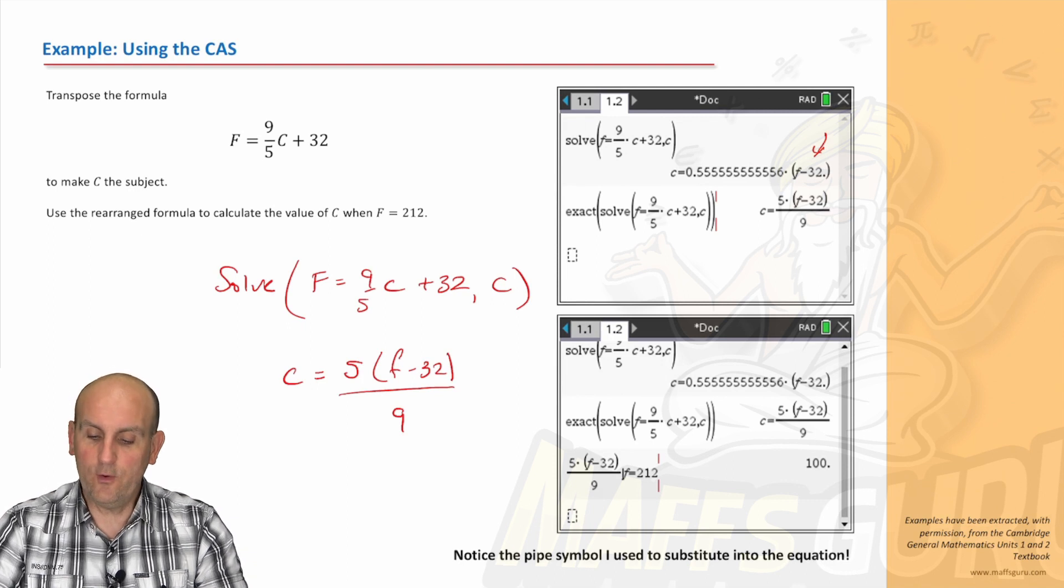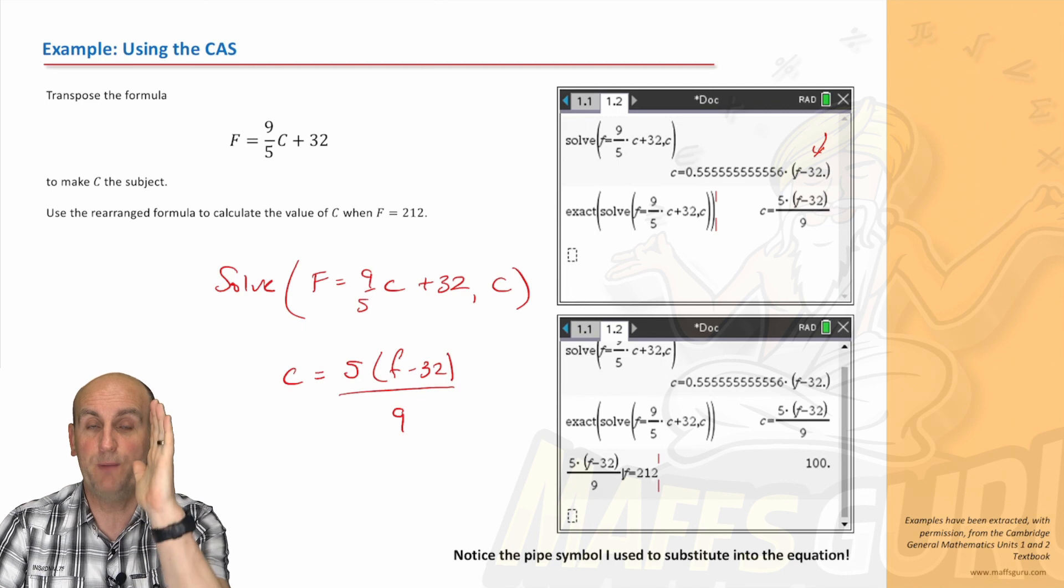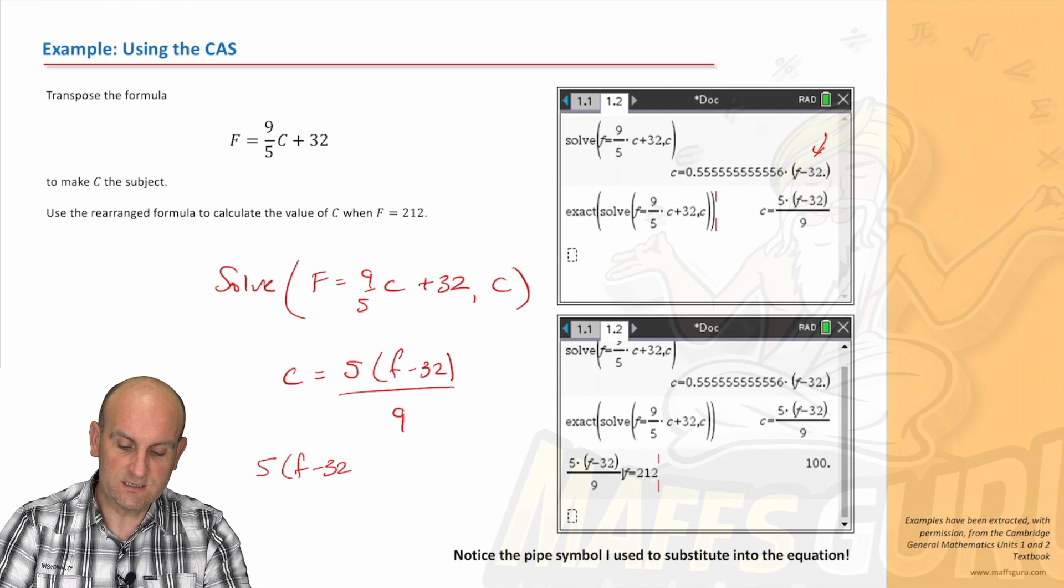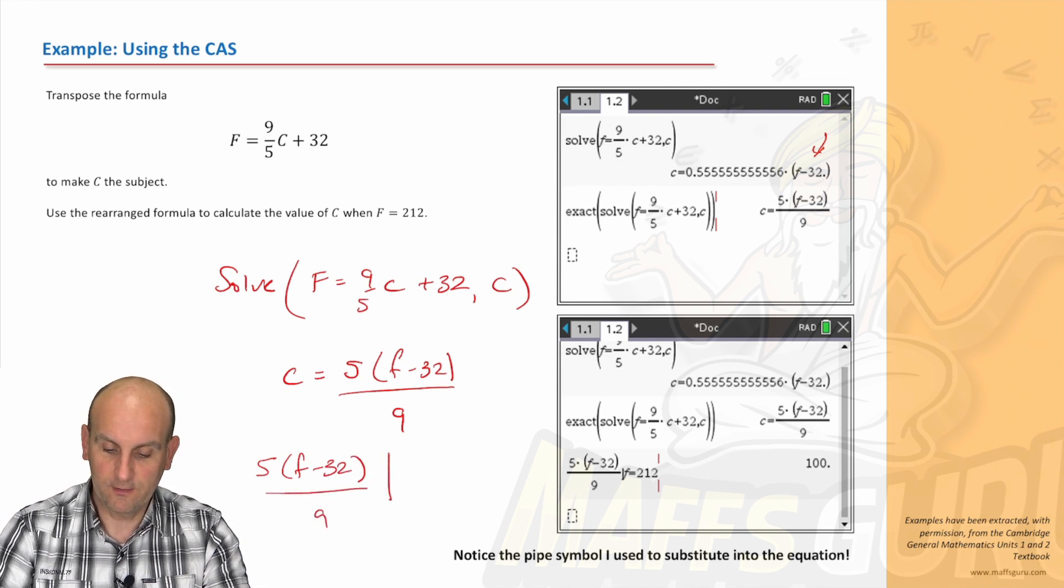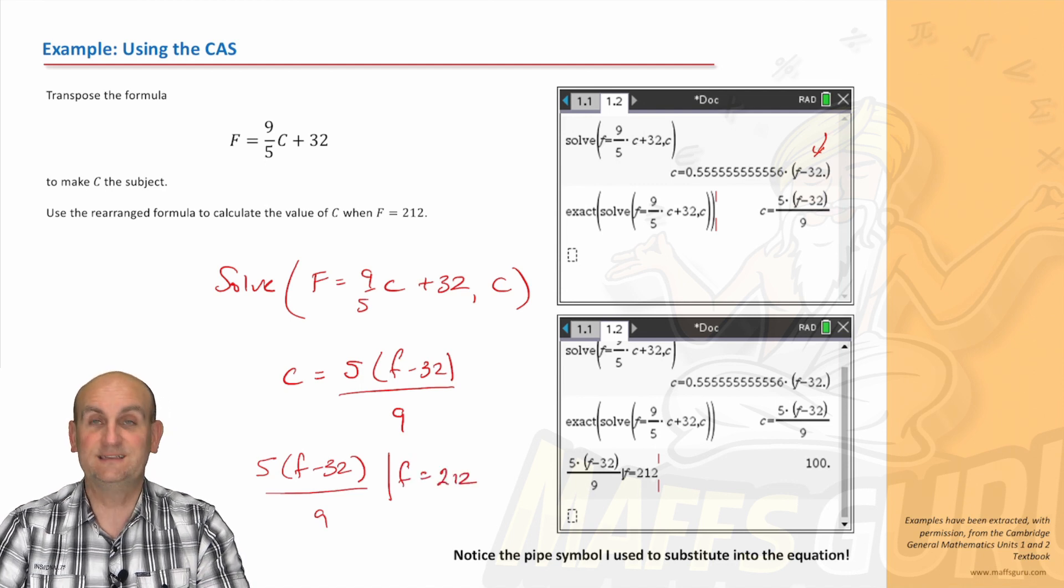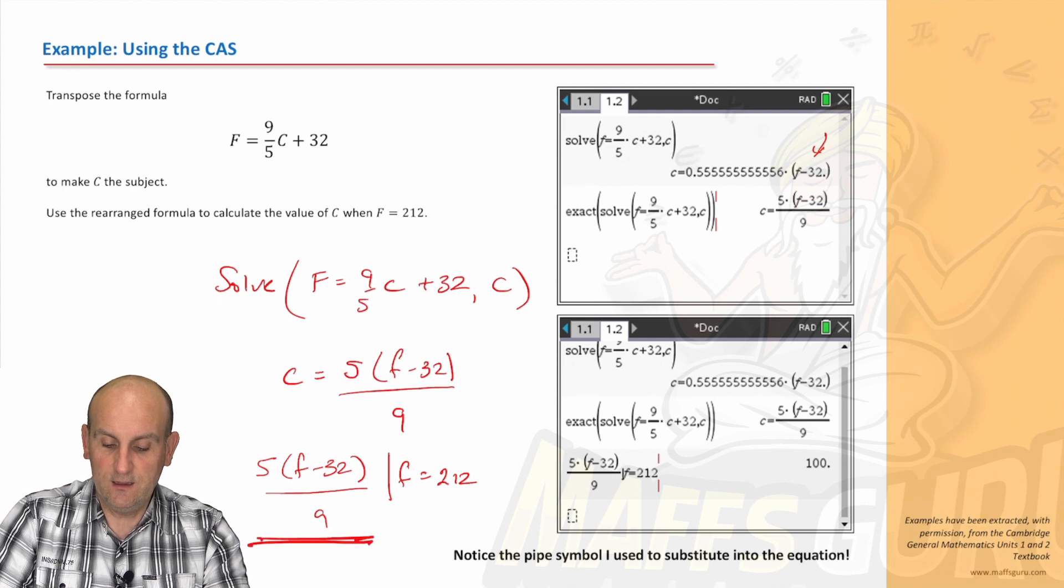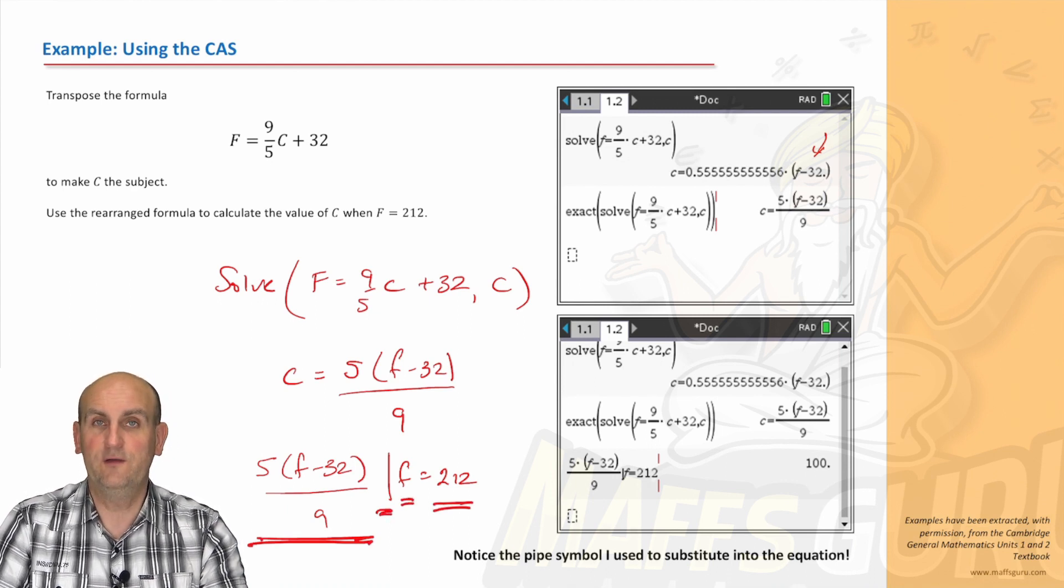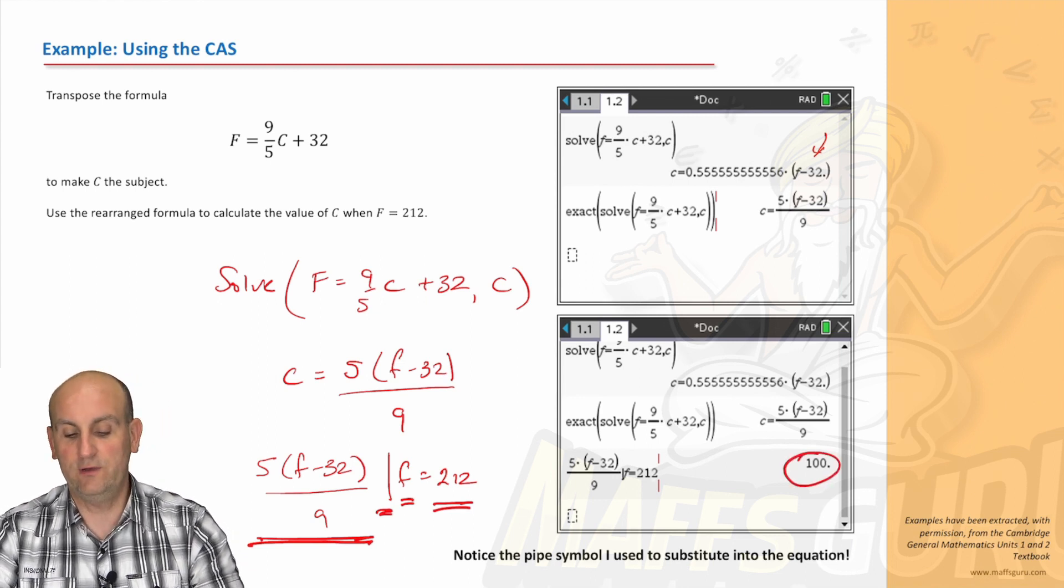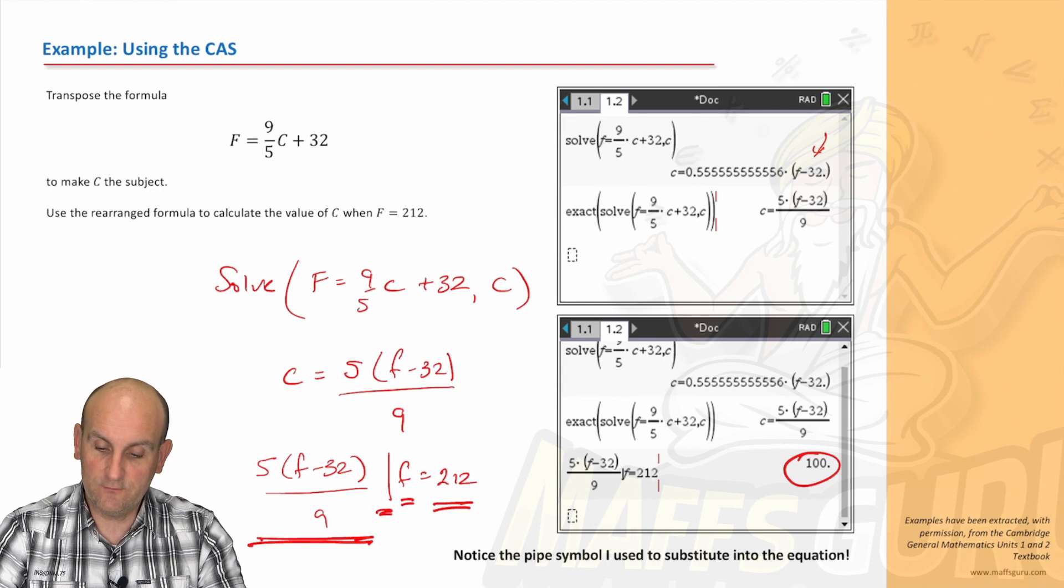Now what did I do then? I then wanted to go on and solve this. How? Well, you may notice there's another little interesting function on your calculator, which is the pipe symbol—it's the vertical line. And when I did 5F minus 32 on 9 and I did pipe and I said F equals 212 typed in exactly like that, what that says is: with this equation here, please substitute the value of F as 212 and return the answer. And lo and behold, what came out was 100.